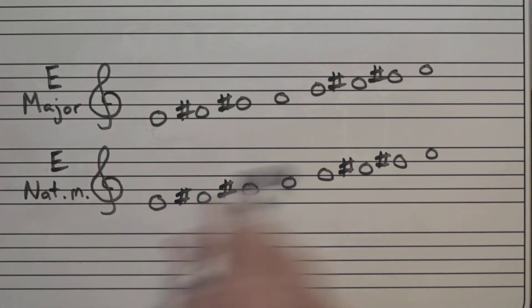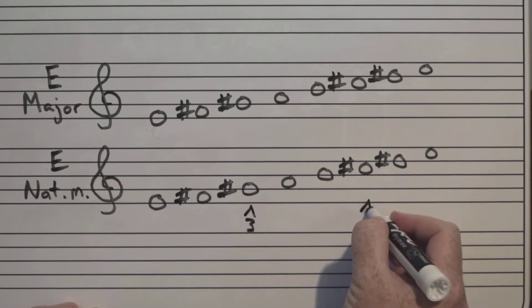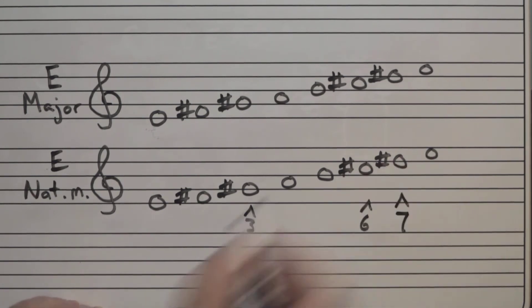And now again, let's change those three notes to create an E natural minor scale. And that is, again, scale degree three, scale degree six, and scale degree seven.